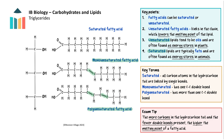Double bonds put a kink into the chain, which pushes the molecules apart, lowering their melting point and making the lipid more fluid. Lipids with many unsaturated fatty acids are usually oils and are often found as energy stores in plants. Those with mainly saturated fatty acid tails are often fats and found as energy stores in animals.